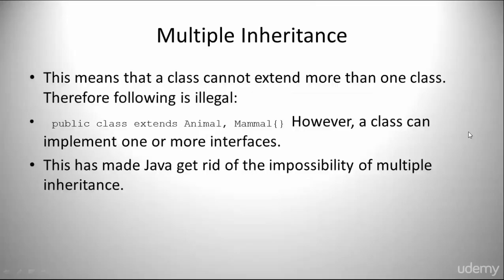Lastly, we have multiple inheritance. This means that a class cannot extend more than one class, so the following is illegal. However, a class can implement one or more interfaces. This has made Java get rid of the impossibility of multiple inheritance. That's it for this lecture, I'll see you guys in the next one.